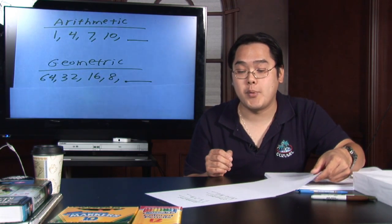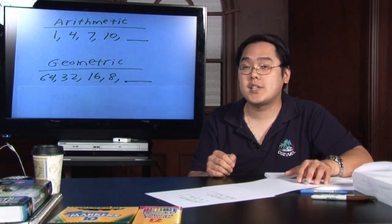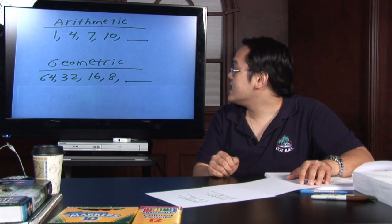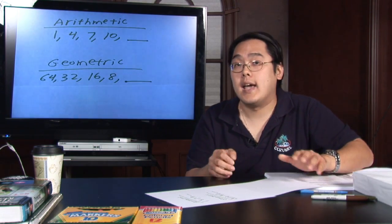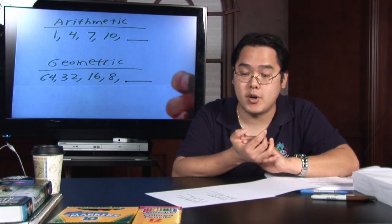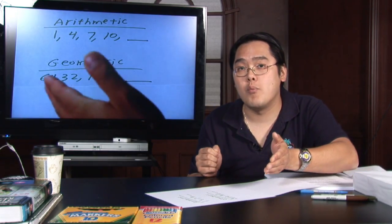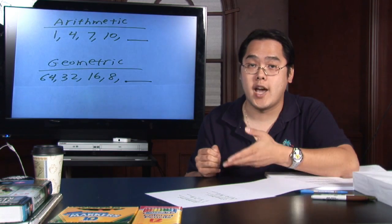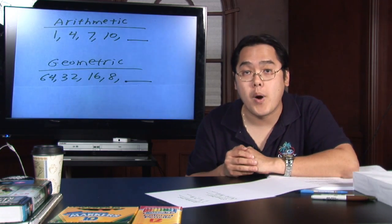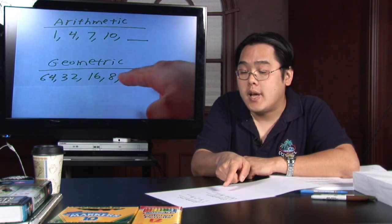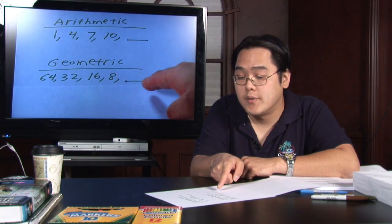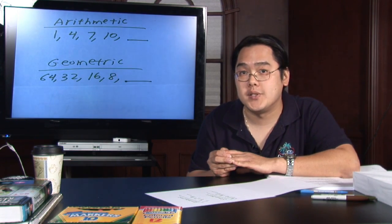And the example I have here is 64, 32, 16, 8, and blank which of course is asking you to solve the next number. But if you look at the numbers more closely you'll see that to get from one number to the next you had to divide by 2 or multiply by 1 half. So that 8 divided by 2 will give you 4 and that will be the next number in the sequence.